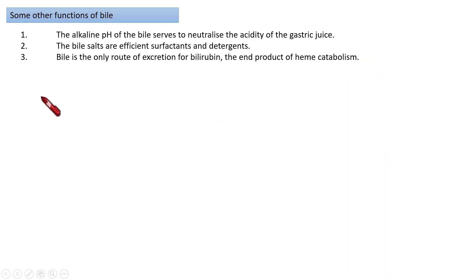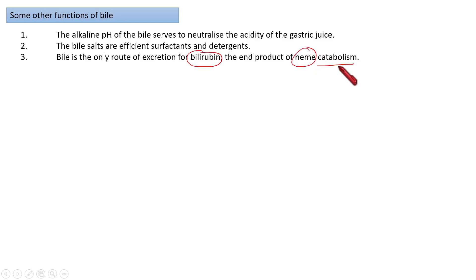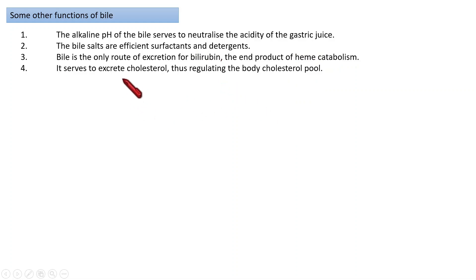Bile acts as the only route of excretion of bilirubin. Bilirubin forms because of the catabolism of heme, which is present inside hemoglobin. From worn-out red blood cells, heme is catabolized and one of the products is bilirubin. That bilirubin is excreted mainly with the help of bile. Bile also helps to excrete cholesterol, and by keeping cholesterol in solution form it helps to regulate the body's cholesterol pool by eliminating excess amounts.